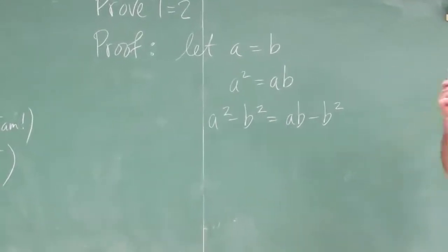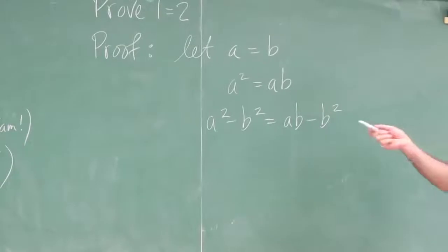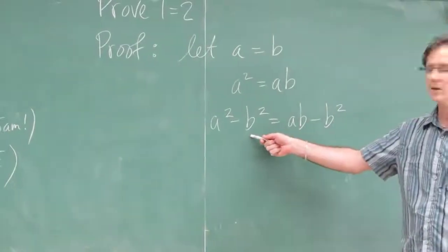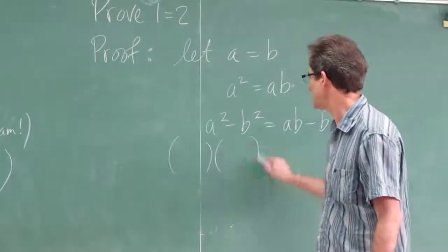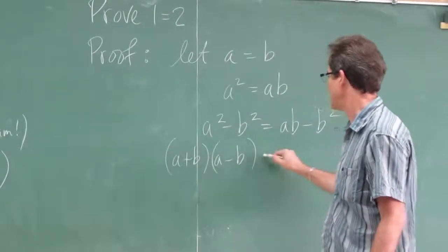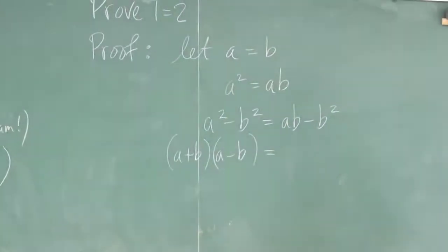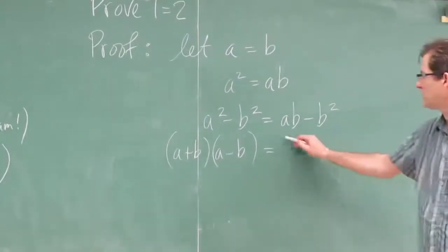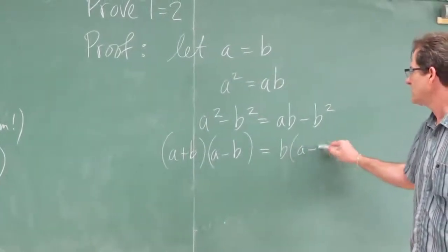Then you can factor both sides by a different method. Left-hand side, difference of squares. So what do you get? A plus b times a minus b. On the right-hand side you can factor by factoring out b, and you get a minus b.